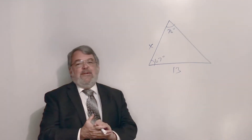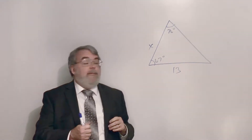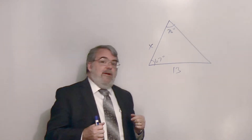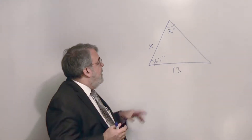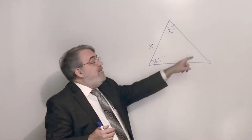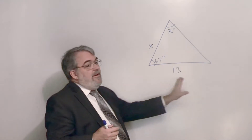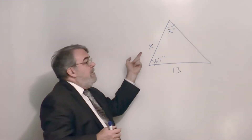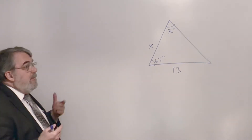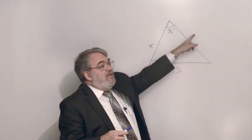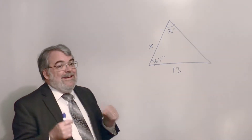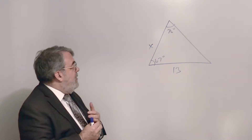My lead-off example for the Law of Sines is to solve a triangle. This is an acute triangle, meaning all angles are less than 90 degrees. I have 76 and 67 degrees, and something else. This side is known to be 13. The assignment is to find x. I'm going to solve for x, but I cannot directly apply the Law of Sines here.